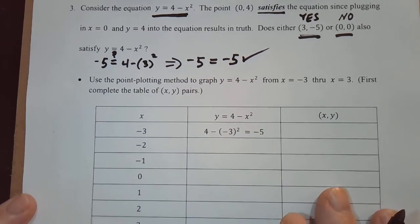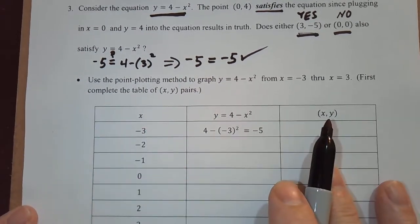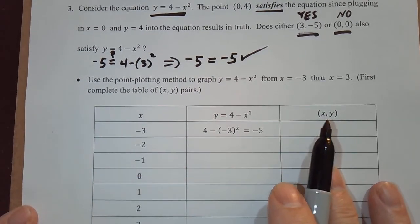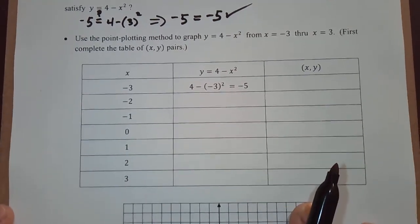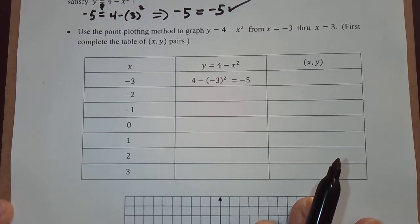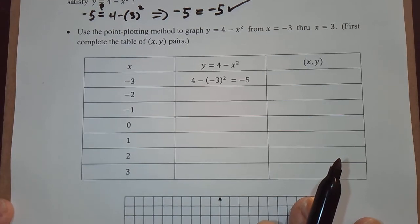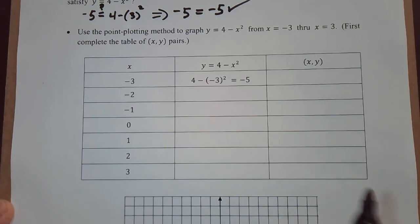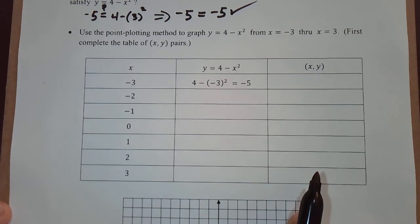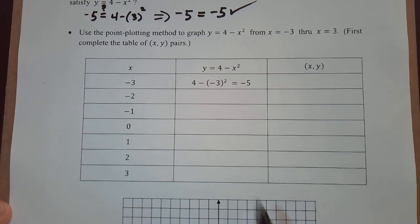We're going to use what's called the point plotting method to graph this equation, and that basically means you make a table of points, or ordered pairs. You plot those points, and once you're done, you draw a nice smooth curve through all of the ordered pairs, through all those points.